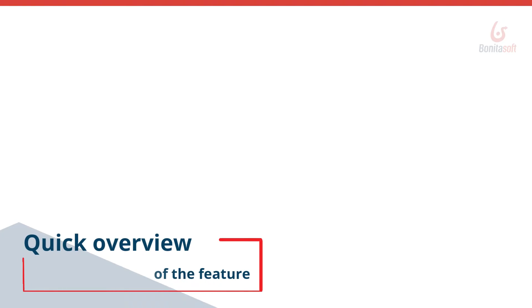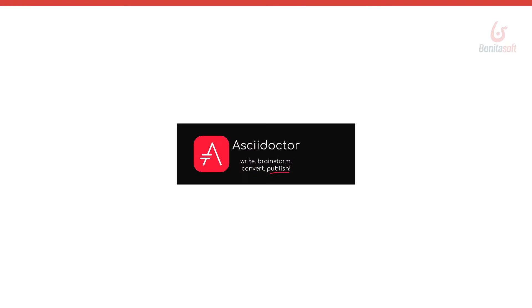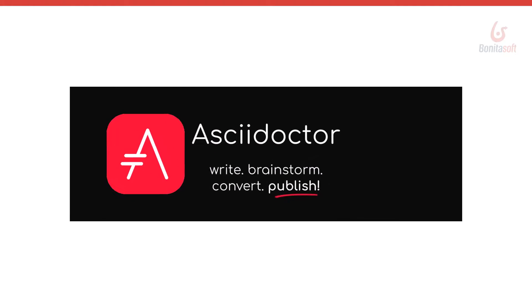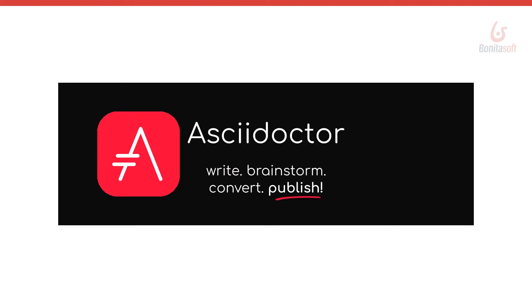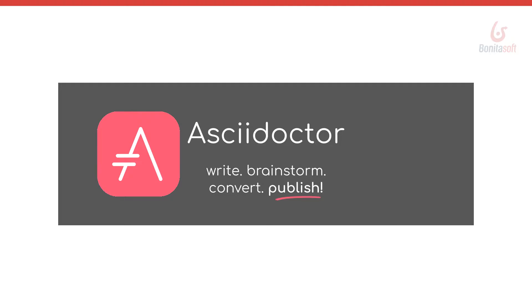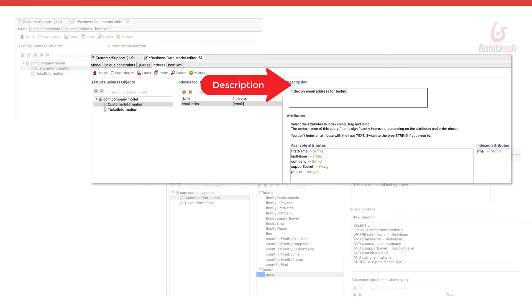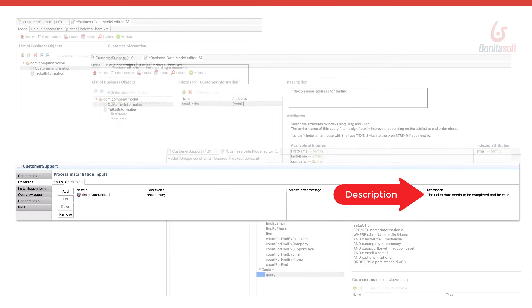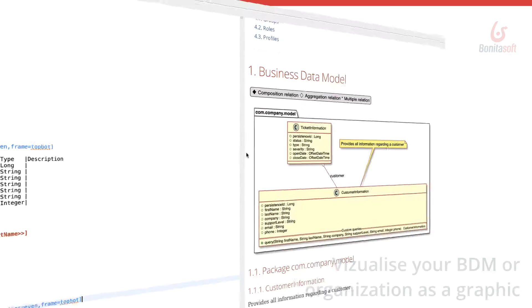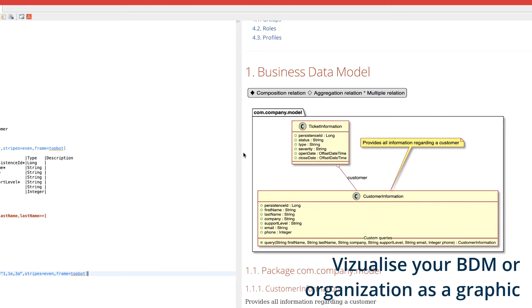How does it work? First, we'll see how the documentation generator works. This generator retrieves all the information available in Bonita Studio and returns it as a document in the AsciiDoc format. Description fields have been added for objects, indexes, business data model queries, parameters, and contracts.